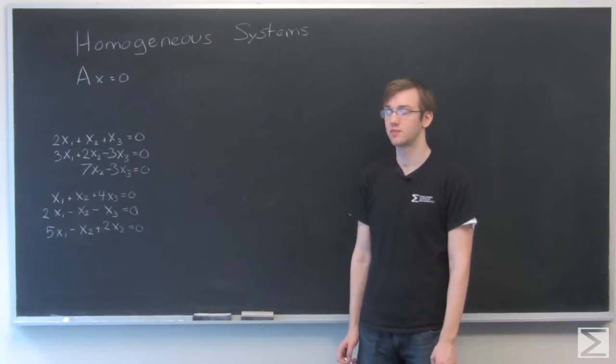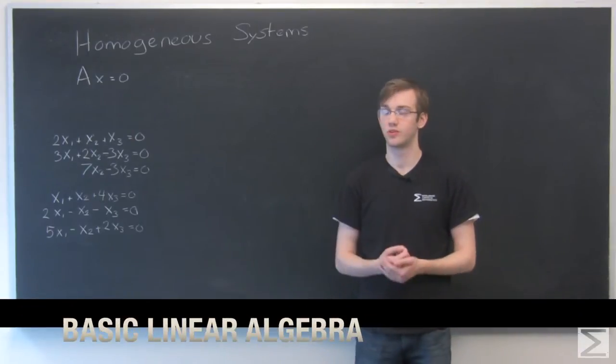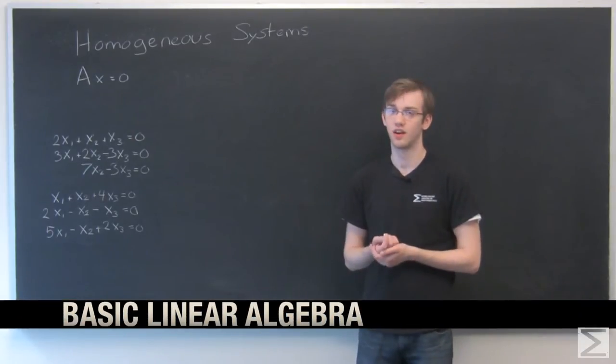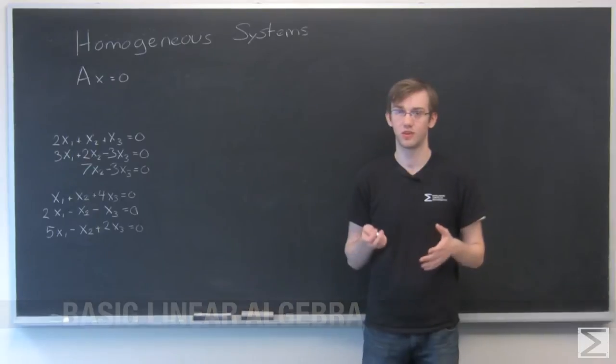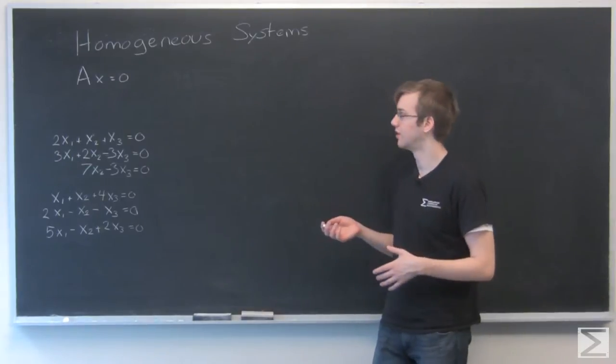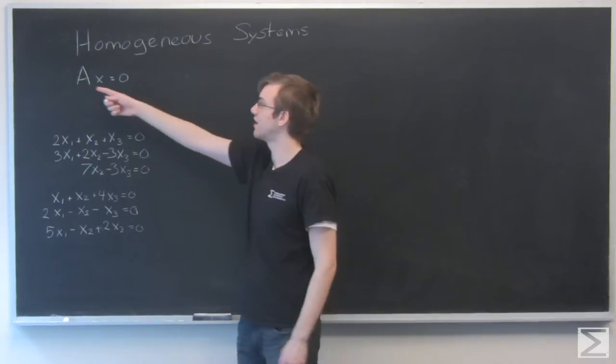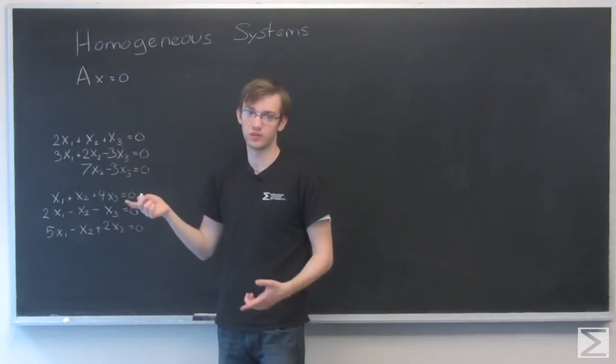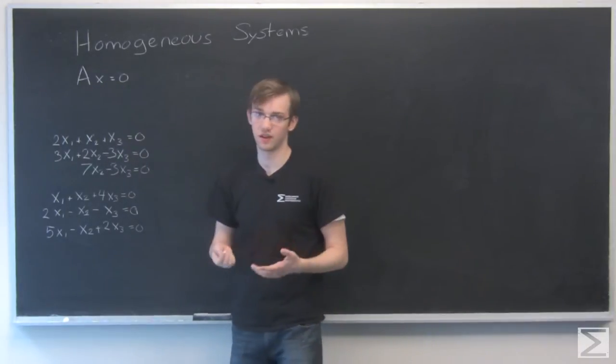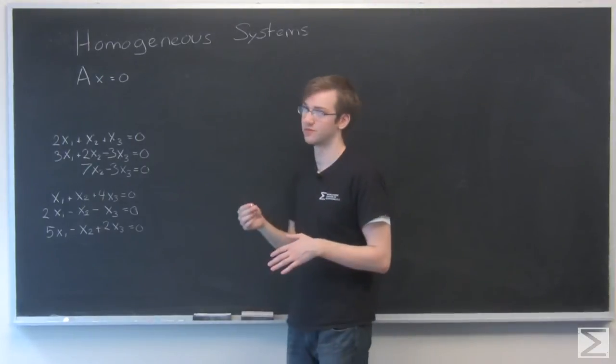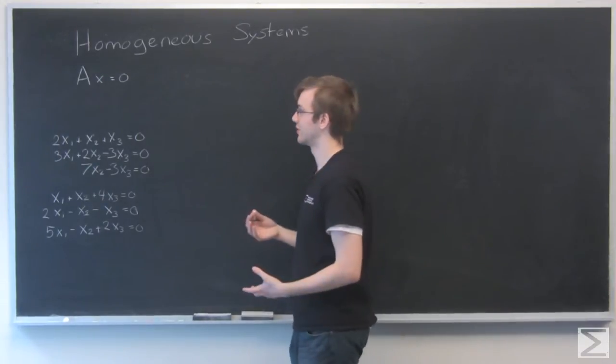So in this video, we're going to look at the special case of linear systems where you have a homogeneous system. And that is a system where each of your equations is equal to 0, represented by this equation right here: Ax equals 0. A is a coefficient matrix, and x is a vector. And that's how you would present a system of equations.